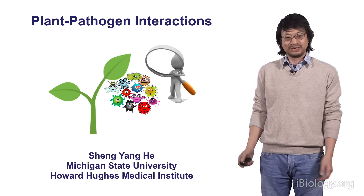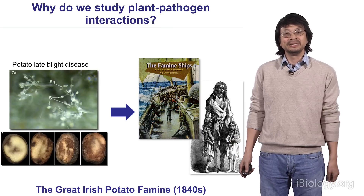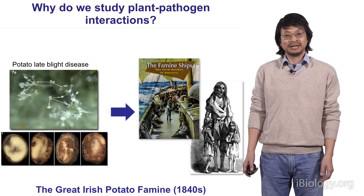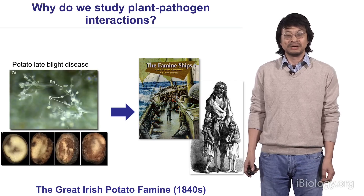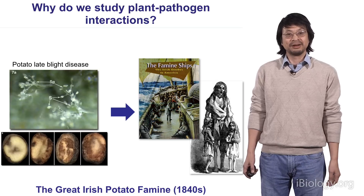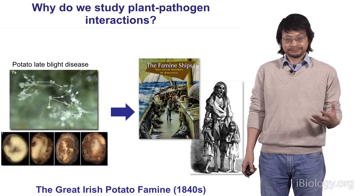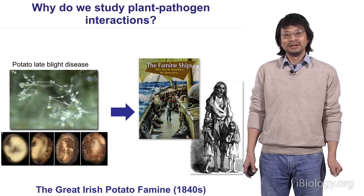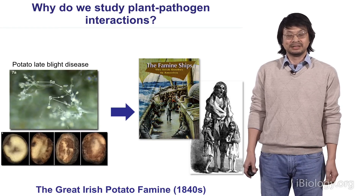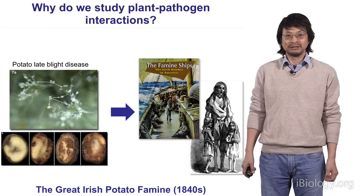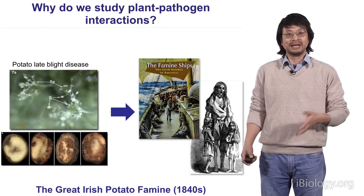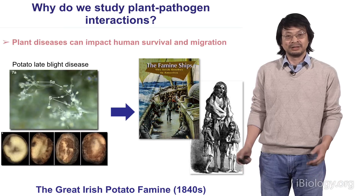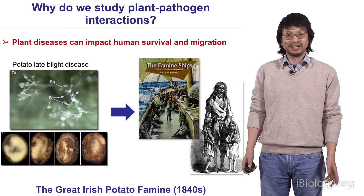Why do we care about plant-pathogen interactions? Some of you may know a disease called potato late blight. This disease devastated the potato crop in the 1840s in Ireland. The event basically killed about a million people, and another million were forced to immigrate out of Ireland. Many of them actually ended up in the United States. This illustrates how a plant disease can have a profound effect on human survival and immigration.